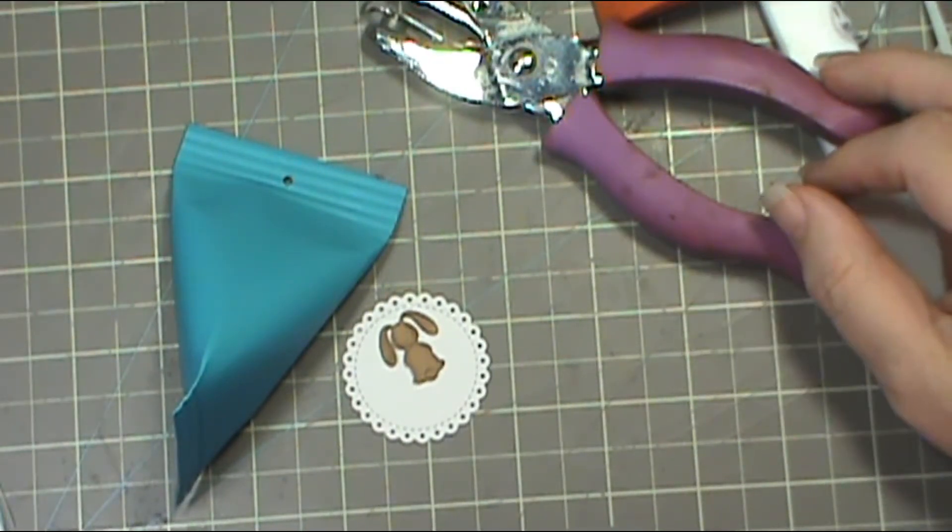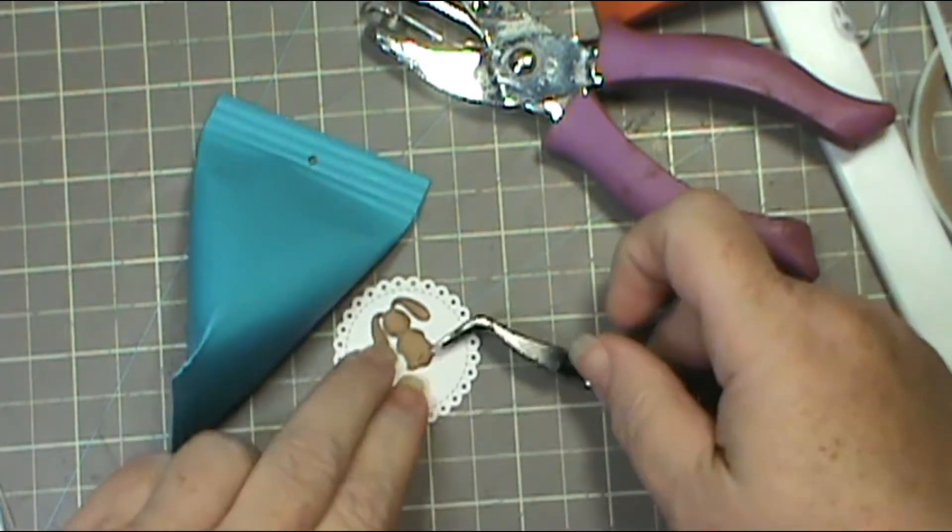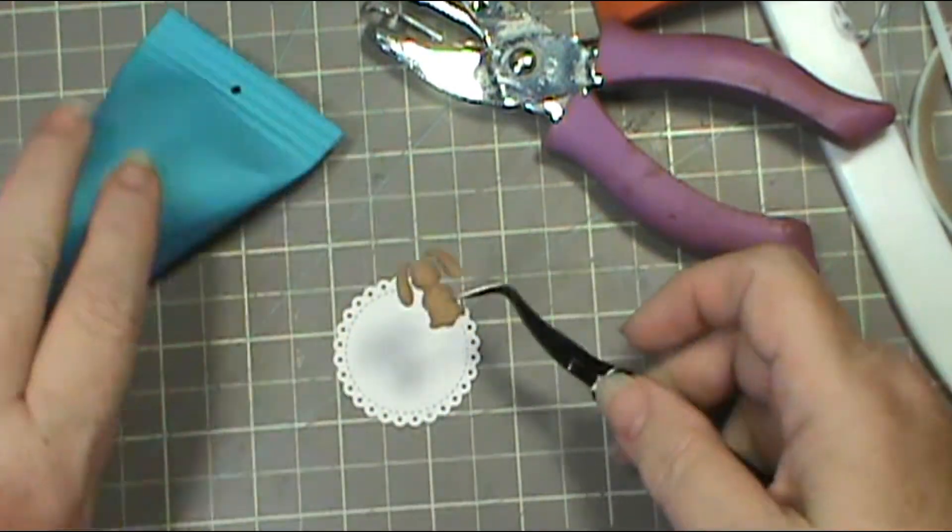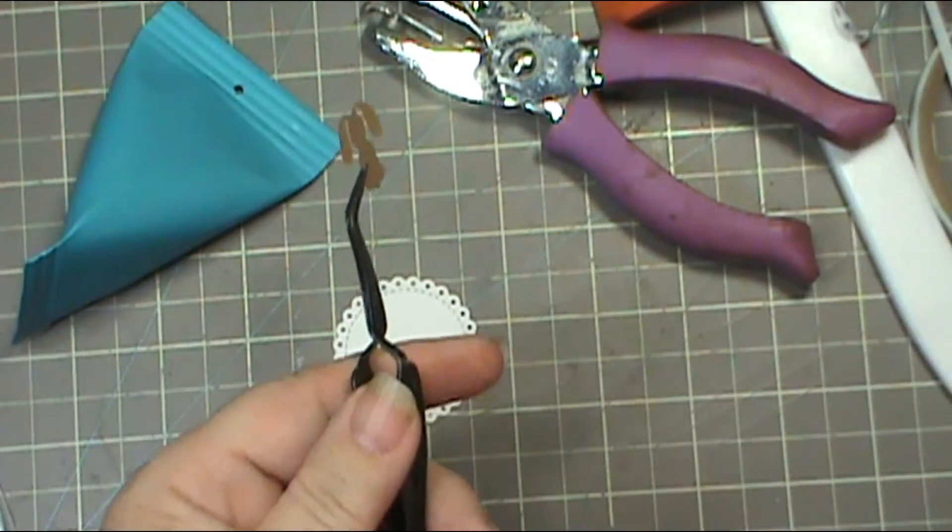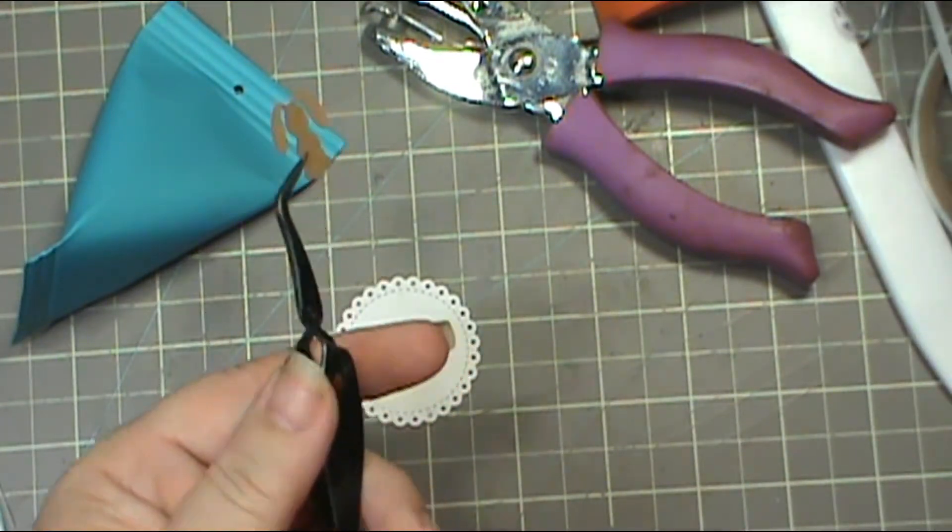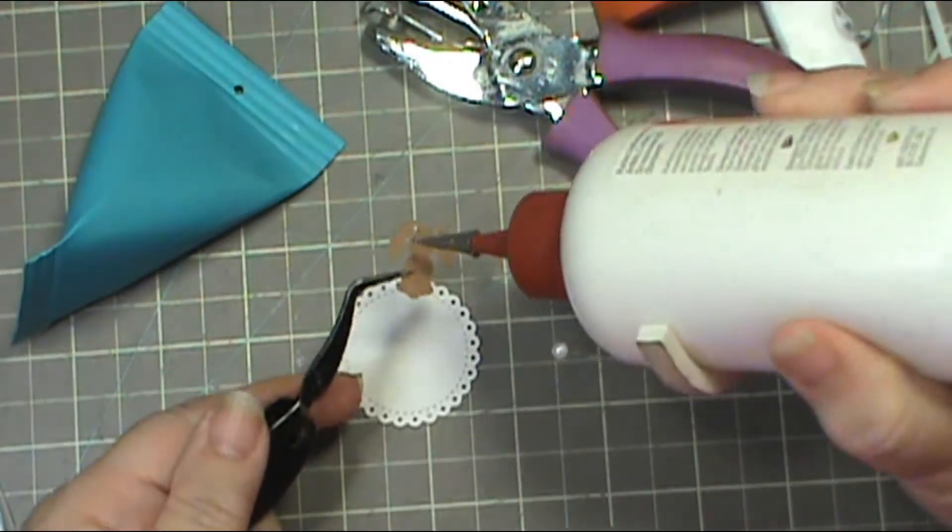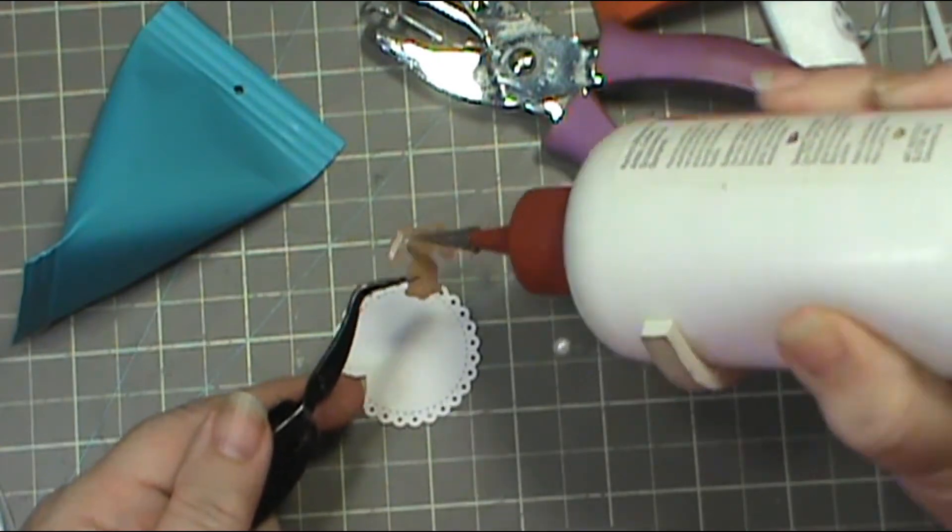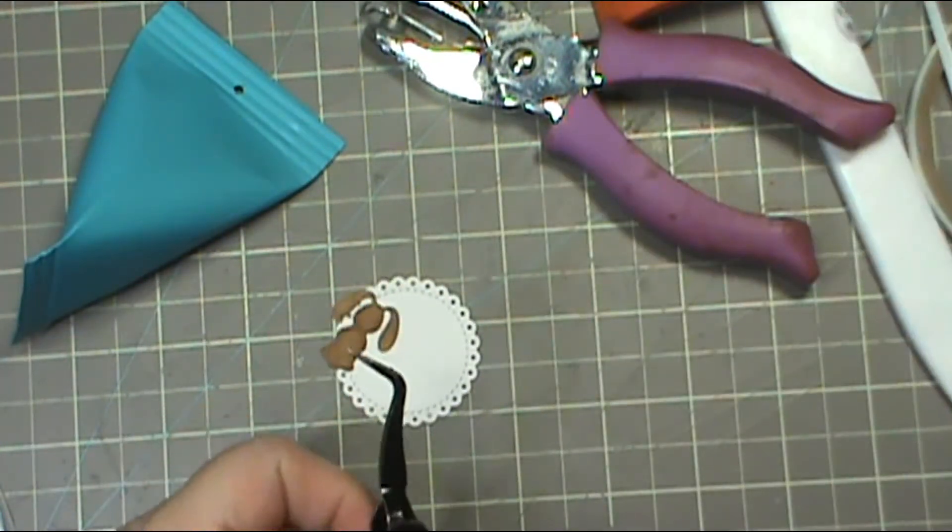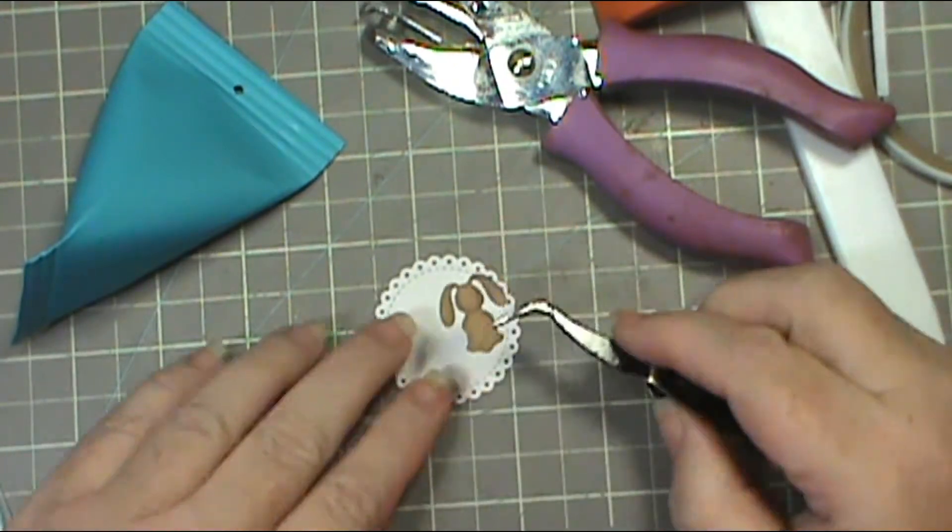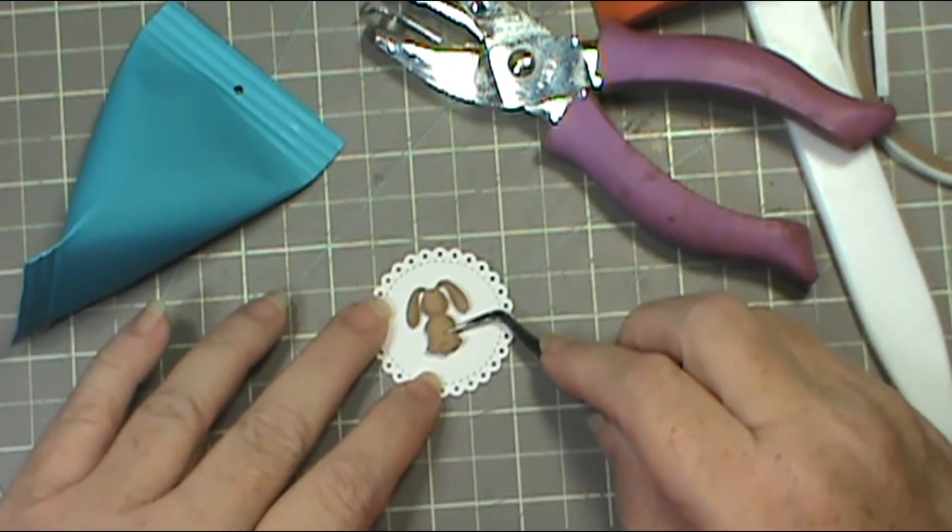I used some pan pastels on it to give it a little dimension and kind of set it apart so it had some shadowing. Then I just get my glue out. This is a real simple project, and it's perfect if you need to mass produce because I was doing 22 of them and they went together super quick.